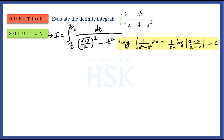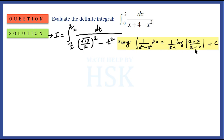In the next step, I integrate using the standard formula: the integration of 1 upon (a² - x²) dx equals 1 upon 2a times log of (a + x) upon (a - x). The integrand is now in exactly this form, so I apply this formula.